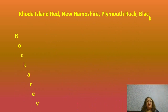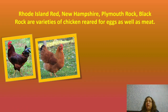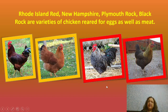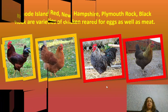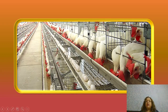Rhode Island Red, New Hampshire, Plymouth Rock, and Black Rock are varieties raised for both eggs and meat — they are neither pure layers nor broilers. In a well-managed poultry farm, chickens are given enough space, are segregated, and food comes via a trough. When they lay eggs, the eggs come out to be collected later. This is an ideal poultry farm.